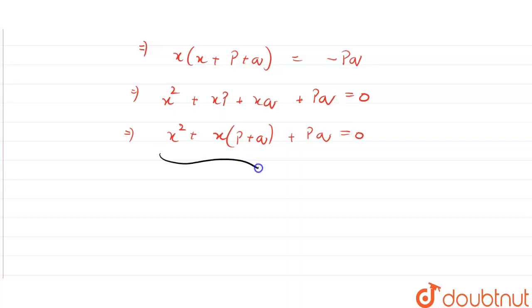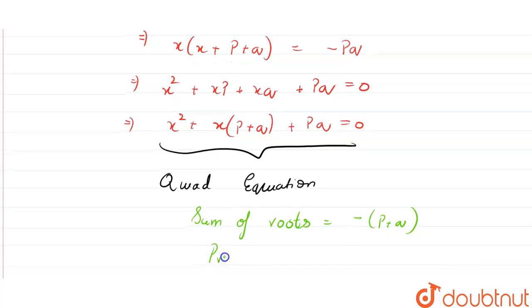So we can see that this has become a quadratic equation, in which sum of roots is minus of (p + q) and product of roots is pq.